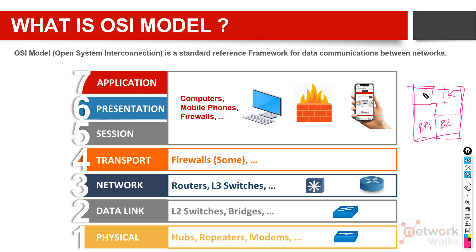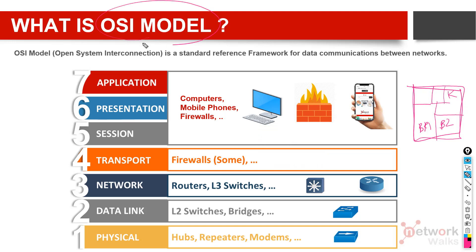Just like a construction map which you follow to build your house, similarly when you want to manufacture a networking device — for example, computers — you need to follow a guideline. That guideline comes in the form of the OSI model.